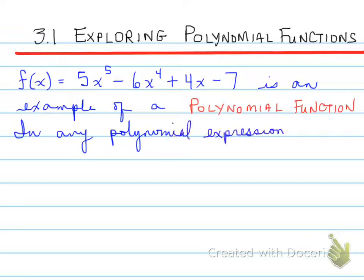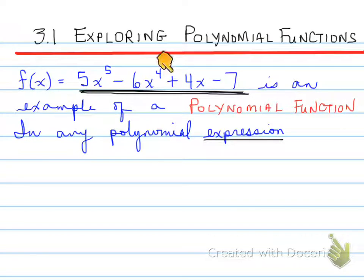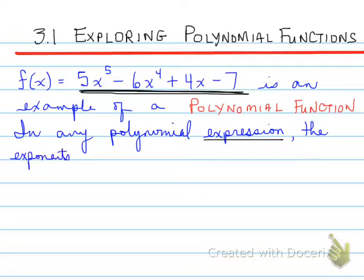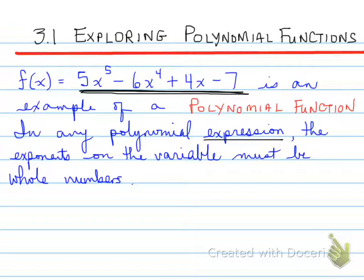Now in any polynomial expression — let's look at the word expression. What you see underlined in black over here, this is the expression. An expression does not have an equal sign; it would just be this part. In any polynomial expression, the exponents on the variable must be whole numbers.